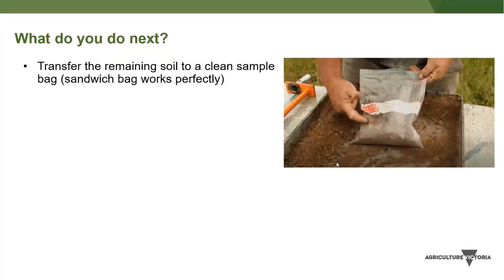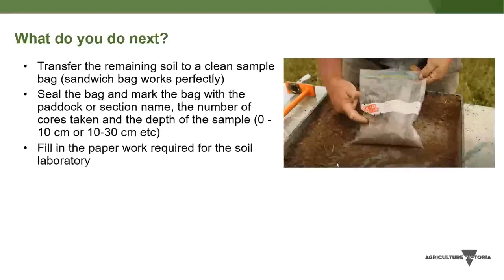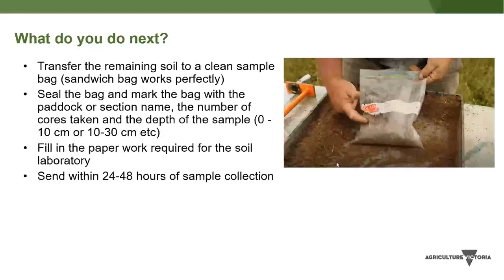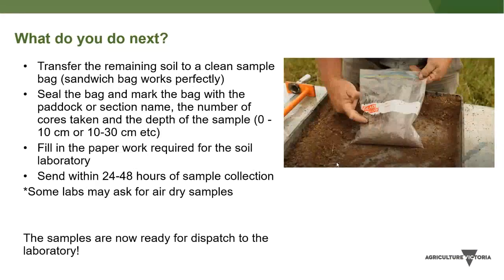Transfer the soil to a sealed bag — a sandwich bag works well. Mark the bag with where the sample came from (paddock or section name), the number of cores in the sample, and the sampling depth. Fill out the paperwork required by the soil lab and send the samples within 24–48 hours of collection. Some labs may ask for air-dried samples, so check what your chosen lab requires.